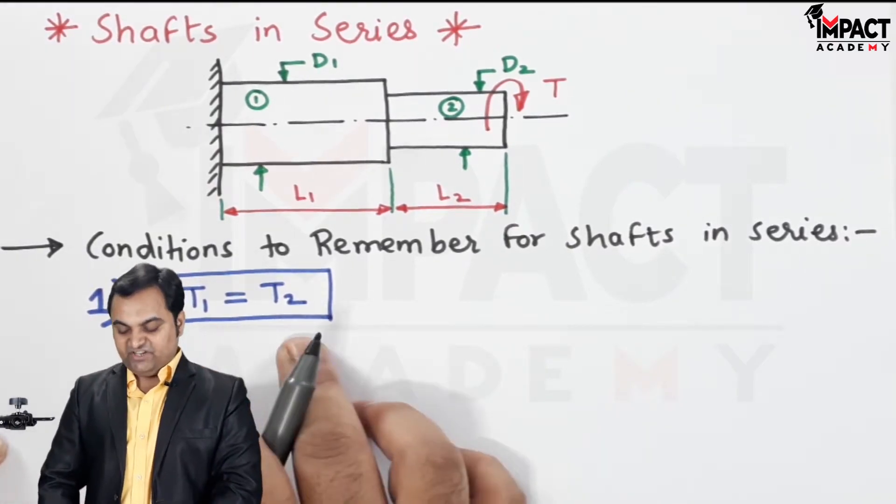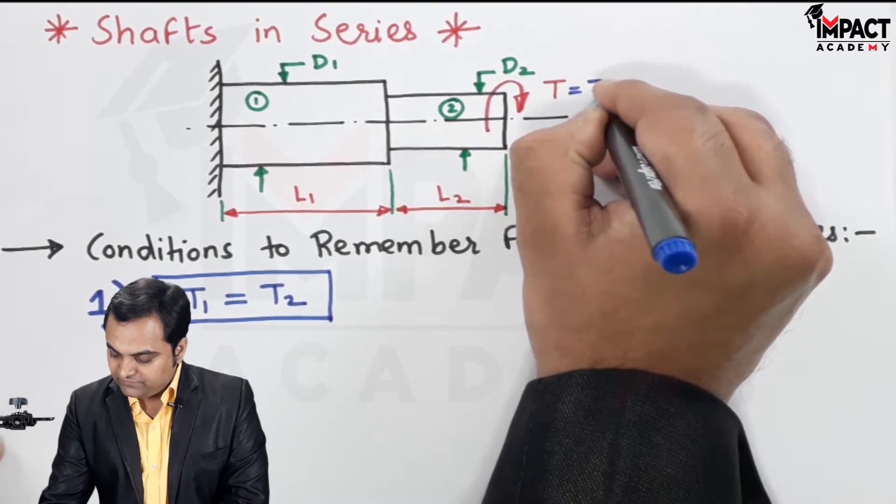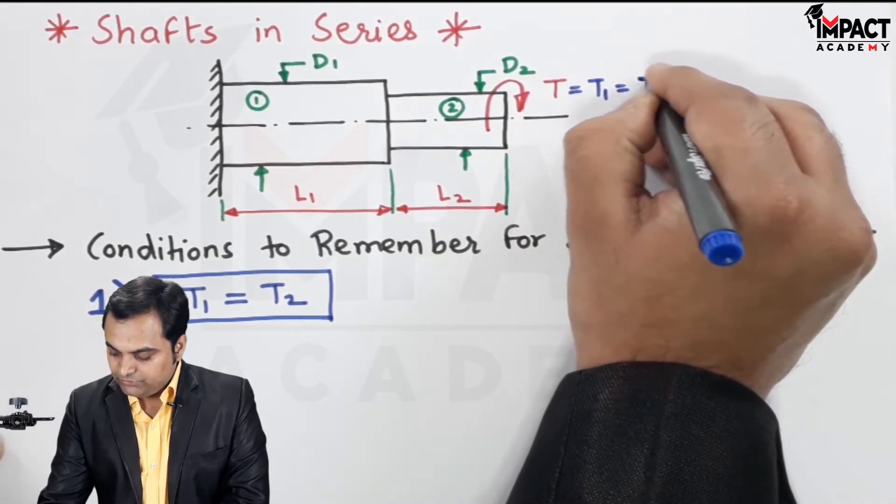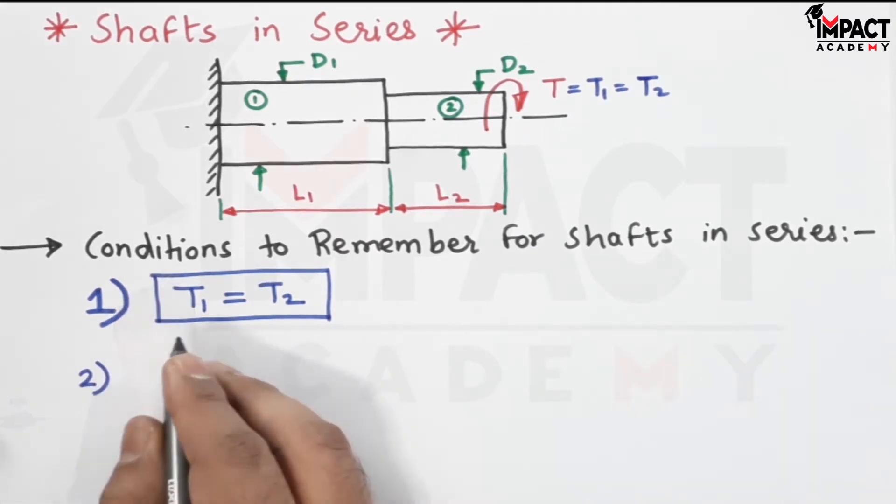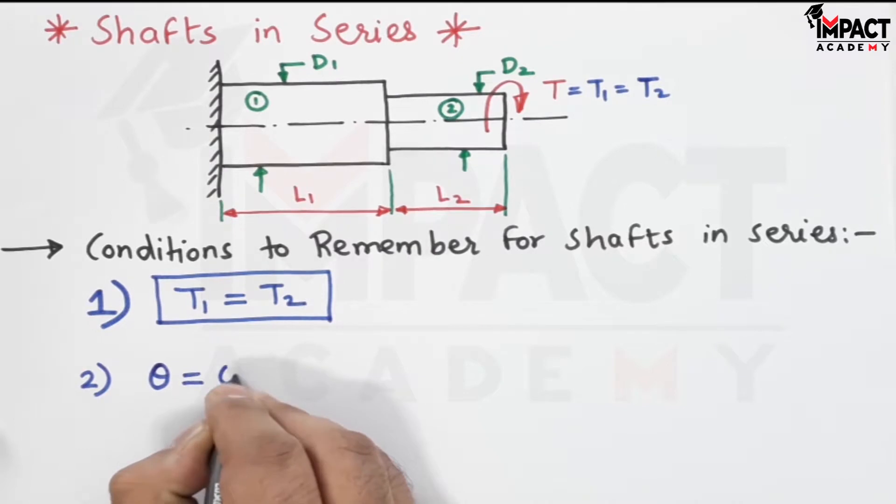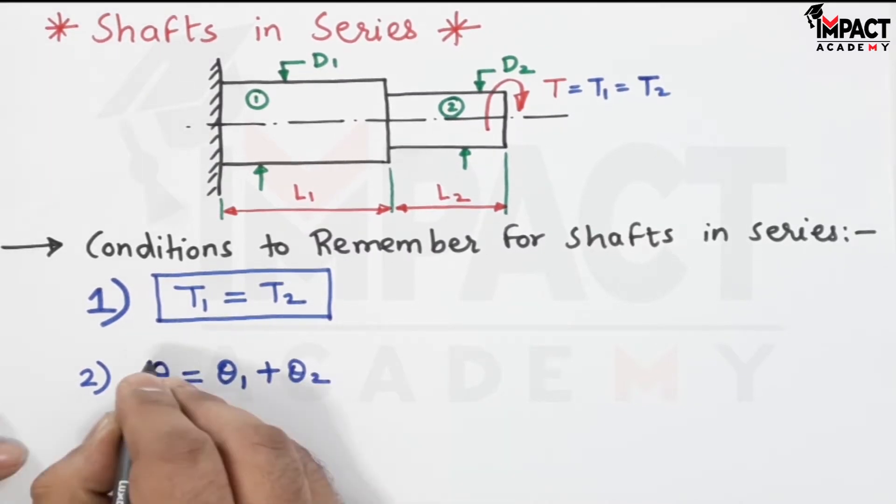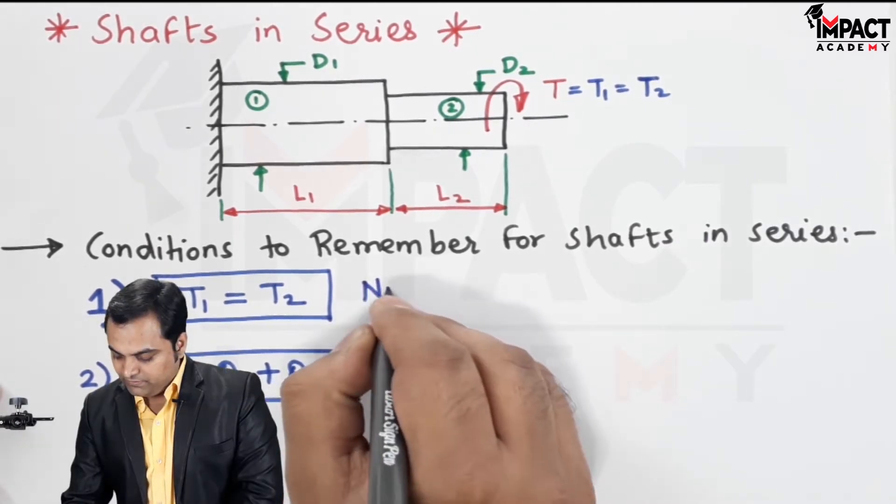That is, T1 is equal to T2. For example, here it is T, so that is T1 equal to T2. And the angle of twist, which is total angle of twist theta, it gets added.